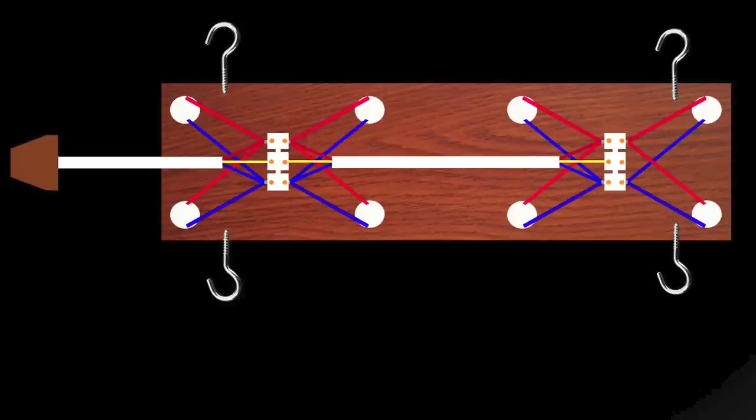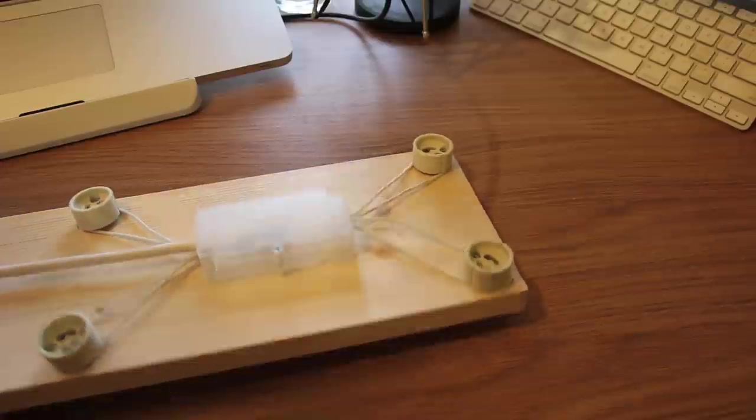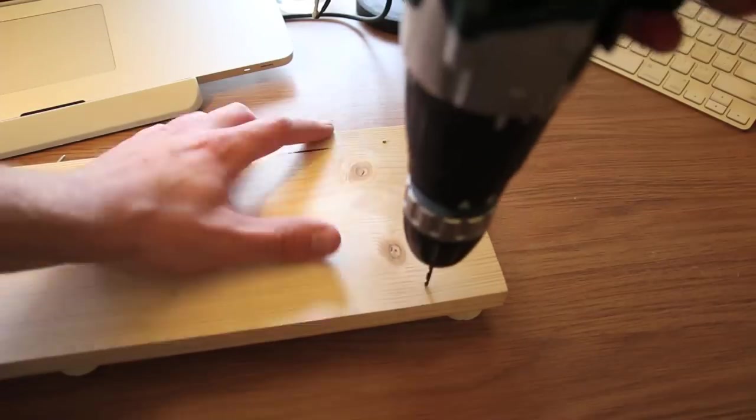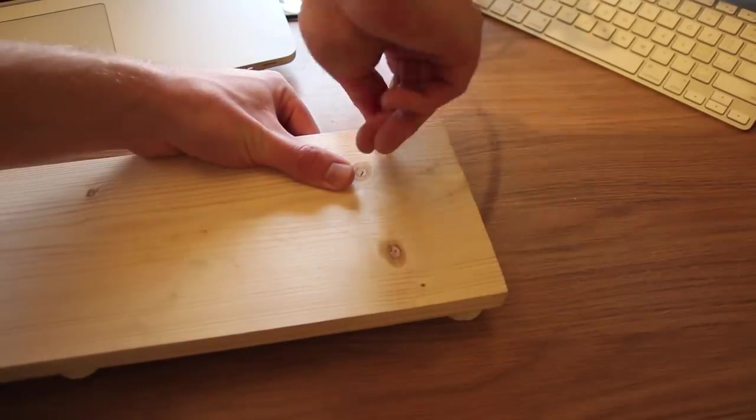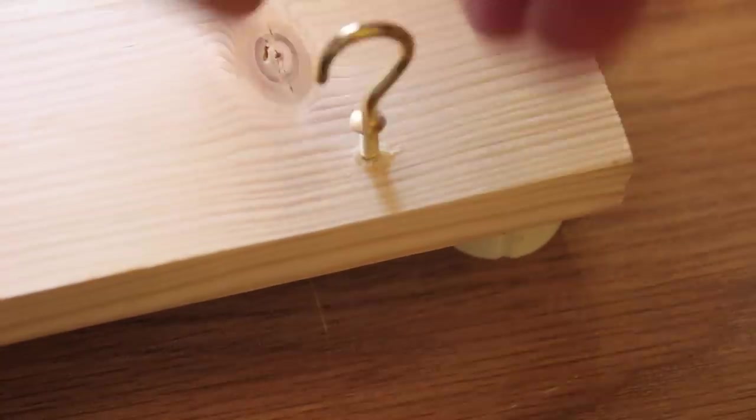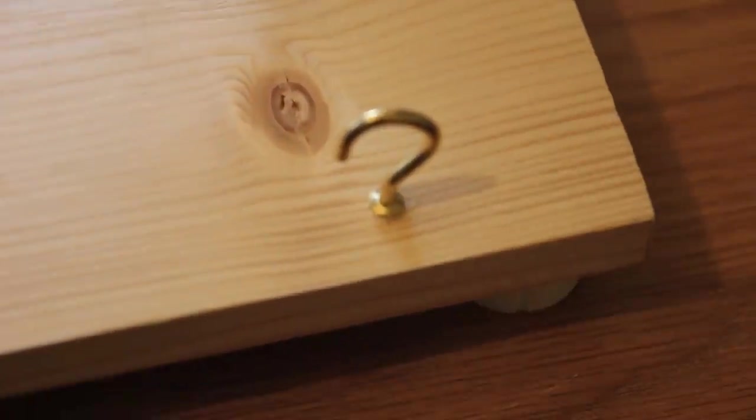And finally we need to add some hanging points. So we'll flip it over, and with the hook screws that I had, well the hanging hooks, I had to drill little pilot holes because they wouldn't self-tack. But again, that's quite easy. If you really were desperate, you probably could self-tack them, but I didn't bother.